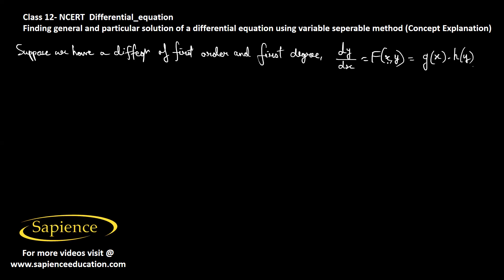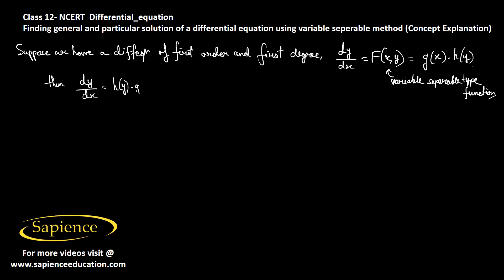The function f(x, y) is said to be of variable separable type, meaning we can write it as a product of two functions — a function of x and a function of y. Then the differential equation will be of the form dy/dx equals h(y) times g(x).